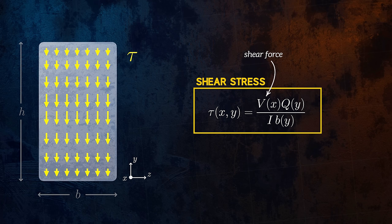Q varies with the distance y above or below the neutral axis. It is equal to the product of the area above the location of interest, and the distance between the centroid of that area and the neutral axis. If the location of interest is below the neutral axis, we consider the area below the axis instead. To calculate the first moment of area at a line at distance y from the neutral axis, we multiply the area of the rectangle above the line by the distance from the neutral axis to the centroid. This gives us an equation for Q as a function of distance y for a rectangular cross section, and so we can obtain an equation which describes how the shear stress varies with distance from the neutral axis.